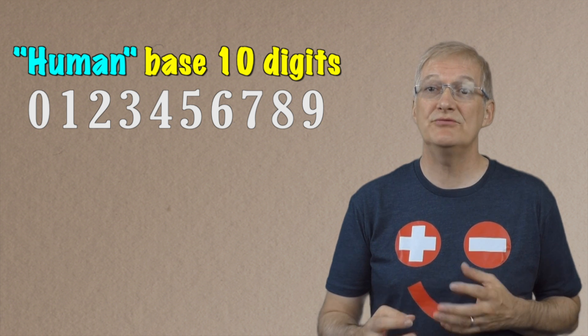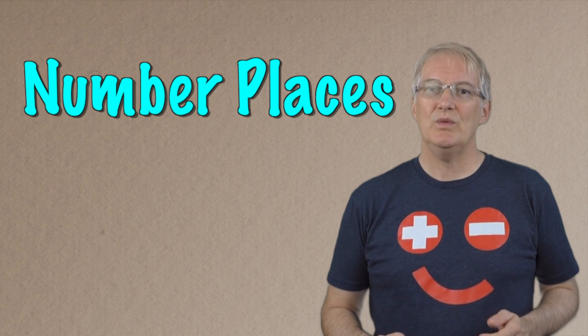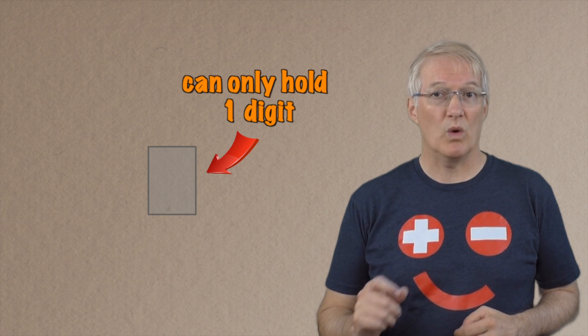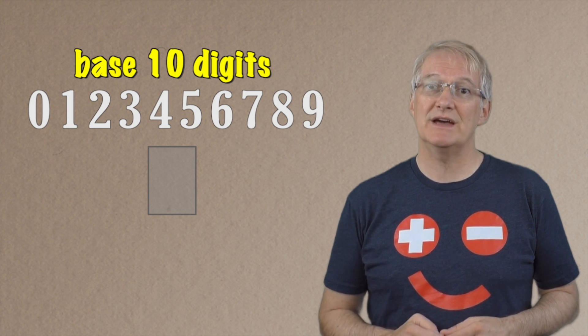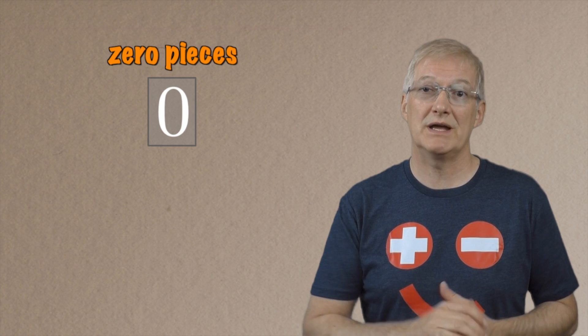Let's get back to human math, so we can talk about math problems that include things that humans like to eat — like chocolate, for example. Much nicer. Now our human base 10 number system uses these 10 digits to represent different amounts by placing the digit into number places. We can think of a number place as a little invisible box that can hold only one digit at a time, and we place our digit in there to represent how many items we have — in this case, how many pieces of chocolate we've got. At the moment we don't have any chocolate so I'm going to place a zero in my number place.